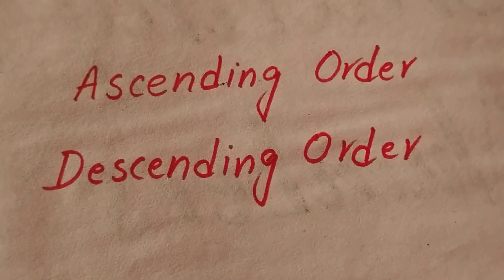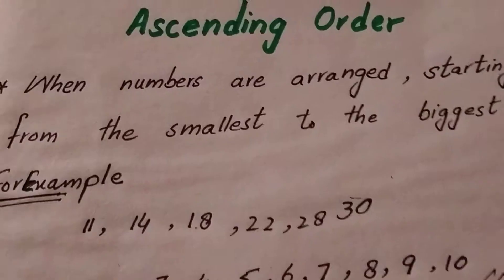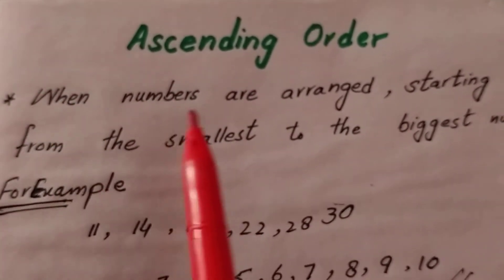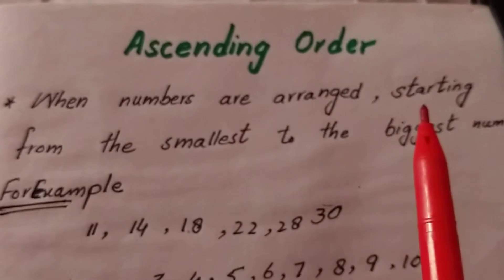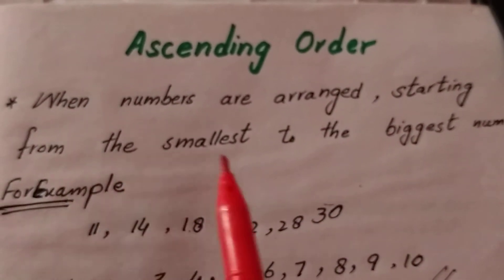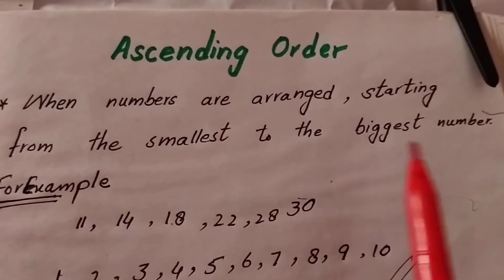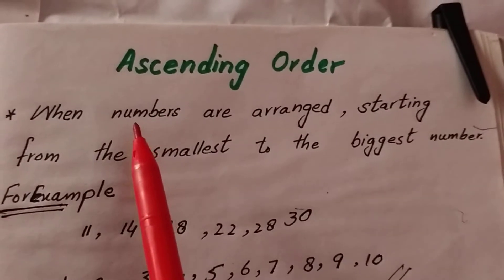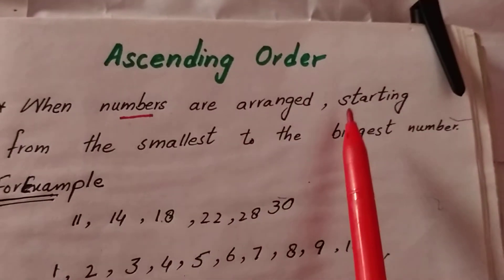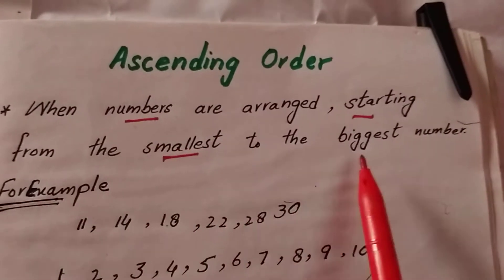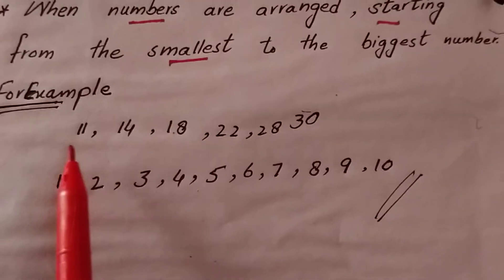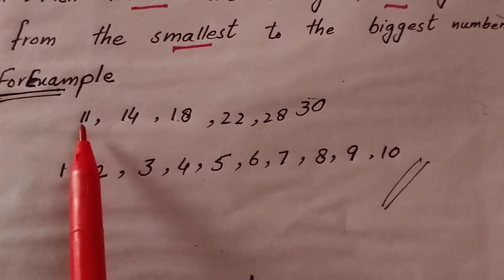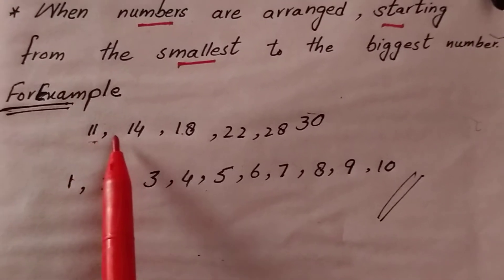First of all we learn about ascending order. In ascending order, numbers are arranged starting from the smallest to the biggest number. For example: 11, 14, 18 — 11 is small, 14 is greater.